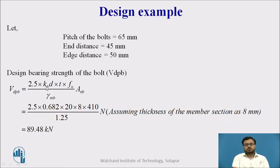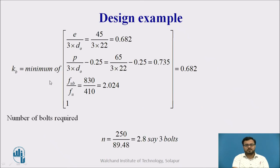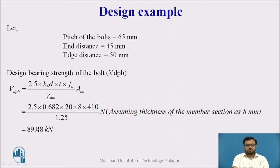VDPB equal to kB D into T into FU divided by gamma MB into ANB. We all know this except kB. KB is determined by using these formulas. KB equal to the minimum of E divided by 3 D0, P divided by 3 into D0 minus 0.25, then FUB divided by FU or 1. E is the end distance. P is the pitch. E divided by 3 D0 equal to 0.682. This equal to this, this equal to this, this equal to 1. The lesser is 0.682.